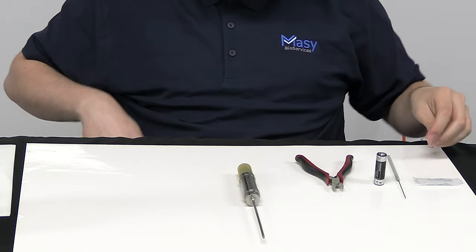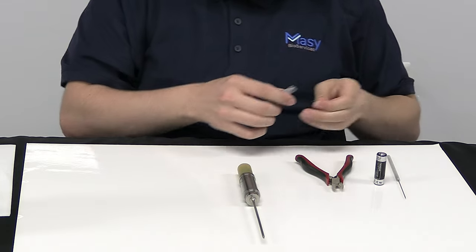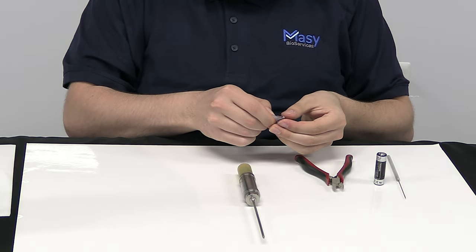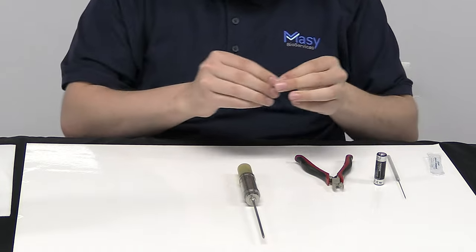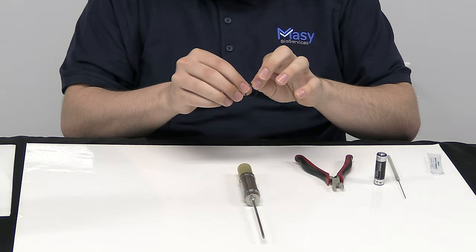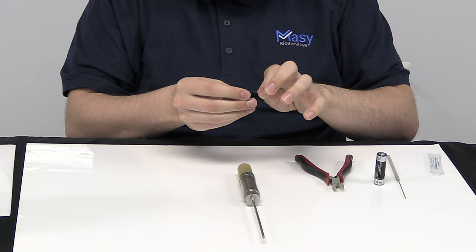We start by taking the silicone grease and the rubber o-ring and ensuring the gasket is greased nicely. So we take a little dot and run it through between our fingers.